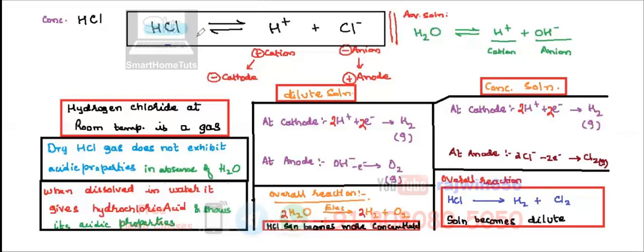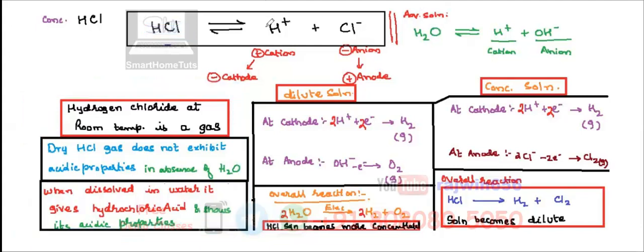The dissociation reaction is going to occur only in presence of water. This part shown is in absence of water — I'll discuss that in a couple of minutes. The first part, in presence of water, HCl is going to split up into H+ and Cl- ions, that is hydrogen ions and chloride ions.